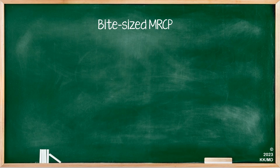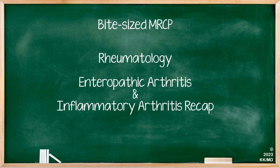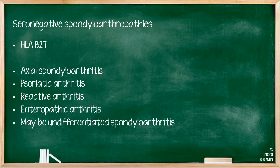Today we'll be covering the last in our series on the spondyloarthritides, looking at enteropathic arthritis. We'll also be recapping what we've learnt about inflammatory arthritis over the last few presentations. Enteropathic arthritis is part of the HLA-B27 associated arthritides.